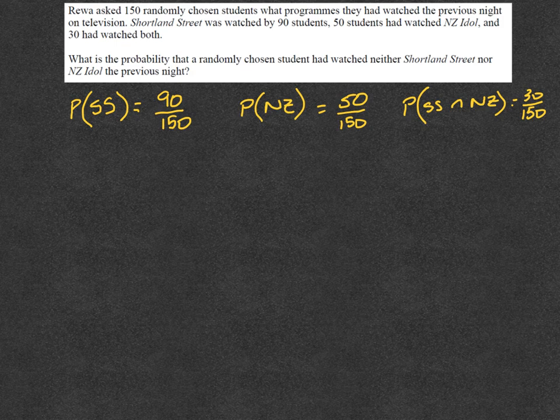Then we're asked what is the probability that a randomly chosen student has watched neither—that's an important word—Shortland Street nor New Zealand Idol the previous night. So we're looking at people that haven't watched either of them.